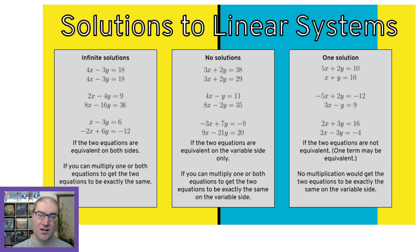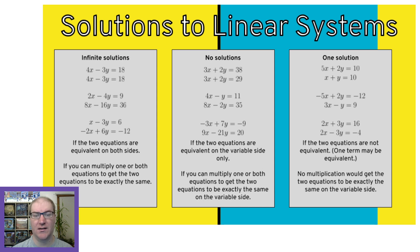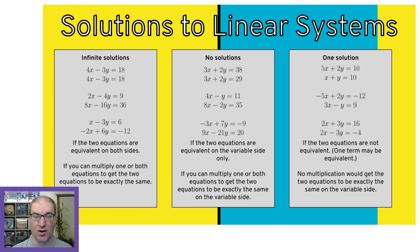The last example: if you multiply the top equation by 2, you get 2x minus 6y equals 12. The two equations are complete opposites of each other. The graphic says they have to be exactly the same, but if something is exactly the opposite, it's also the same — because you can multiply by negative 1 to make them exactly the same. So if I multiply the top equation by negative 2, everything will be exactly the same.